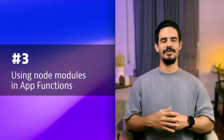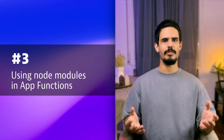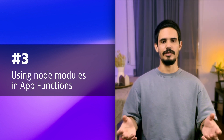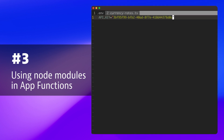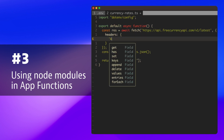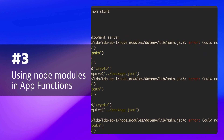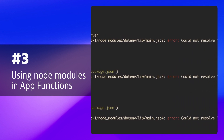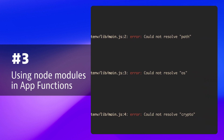You now know how to access third-party APIs from your Dynatrace app. But most APIs require some sort of authorization, right? So you go ahead and create a .env file with your credentials, then install the .env package and use it in your App Function — only to realize that it doesn't quite work. The reason is that App Functions run in the Dynatrace JavaScript Runtime, which has restricted access to some node modules such as OS, Path, or Crypto, which are all used by this .env package.